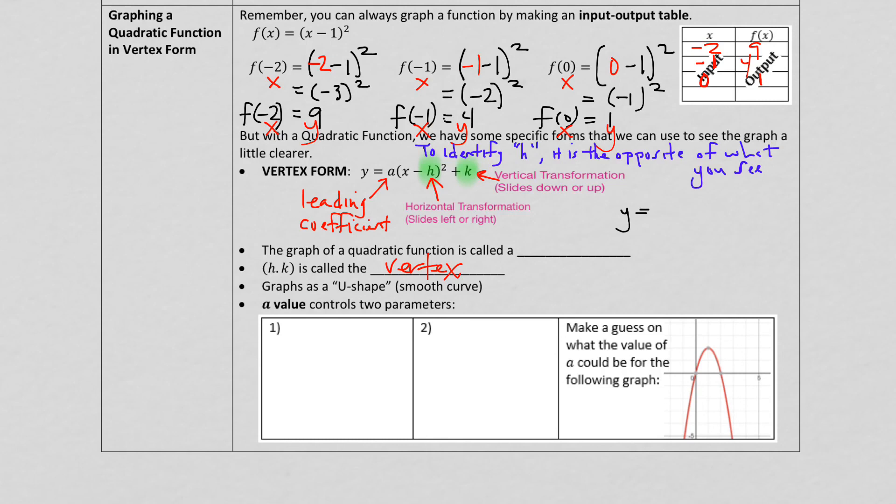So for example, if I give you this made-up example, y equals 2x plus 3 squared minus 5, you can see that a here equals a 2, here's h and here's k. Now to identify h, since you see a plus 3, you'd say that h is going to be minus 3. That's the only tricky one when identifying a, h, and k.